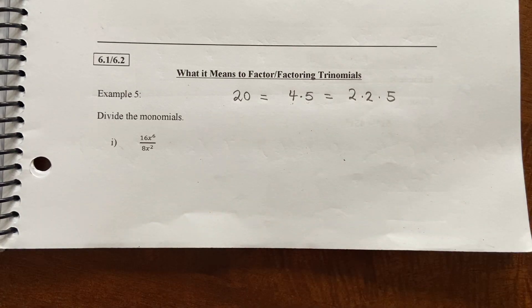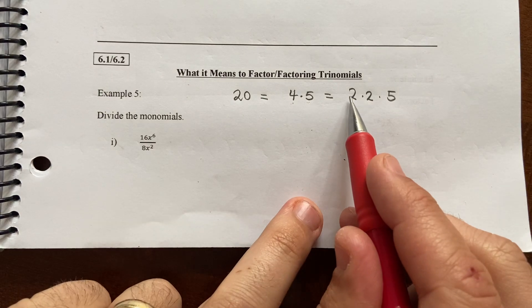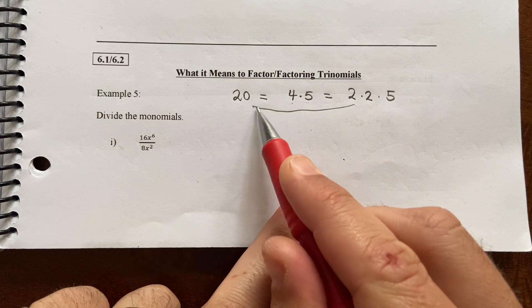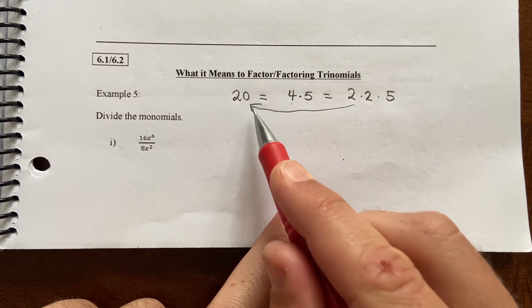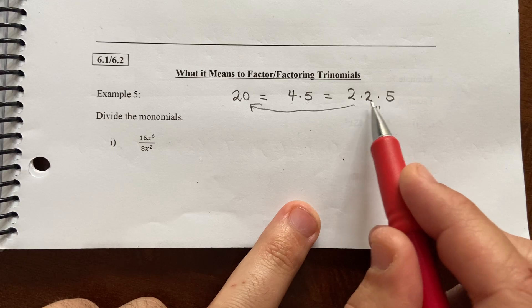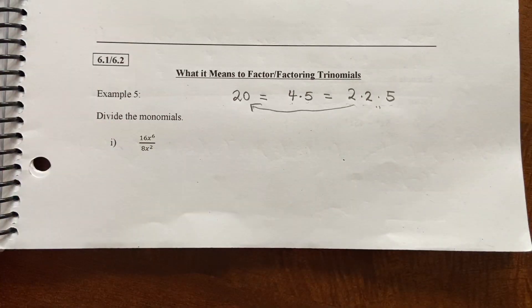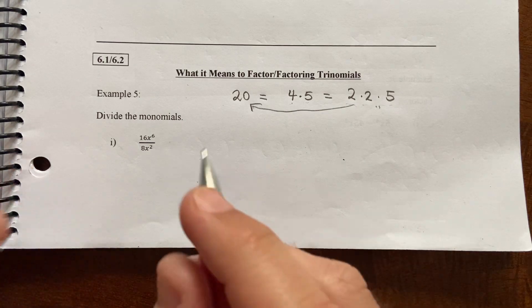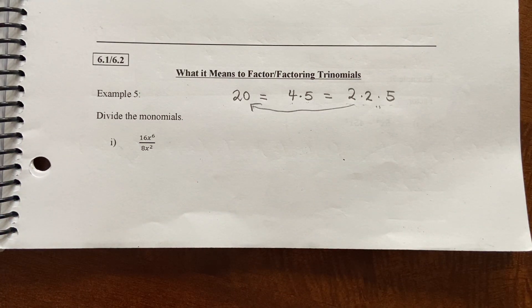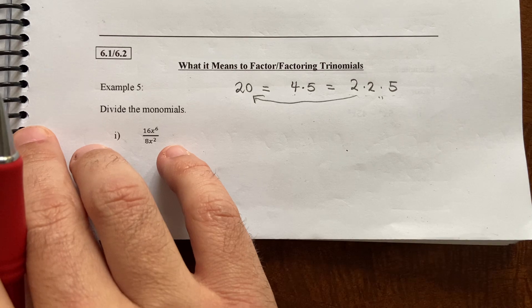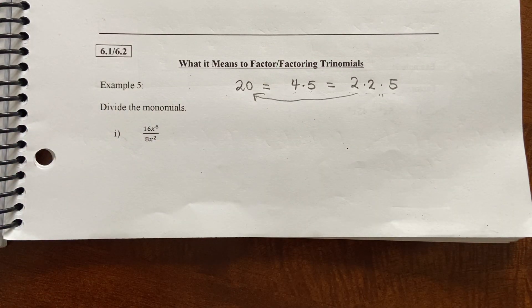That's why I'm saying factoring is like unmultiplying — we're multiplying these out to get back to 20, so the factored version is the unmultiplied-out version. I'll go through all these problems, and just like the other video, I encourage you to pause and play the video after practicing some.